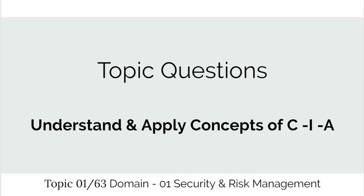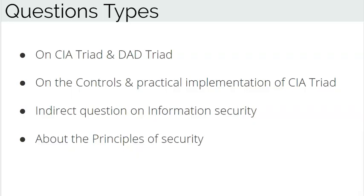In the exam, you will not get direct questions on these concepts. Questions will test your understanding of the impact of controls, countermeasures, or attacks on security objectives. Questions may also check your knowledge about the inverse of the CIA Triad, or ask indirect questions on information security implementation. You may also find questions requiring knowledge of the link between principles of security and security objectives. As a suggestion, do not go in depth into any standard, as the CISSP exam is not standard-specific.